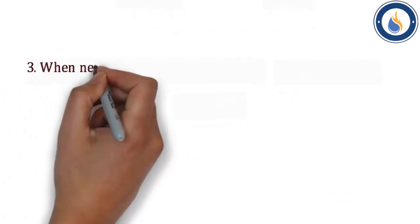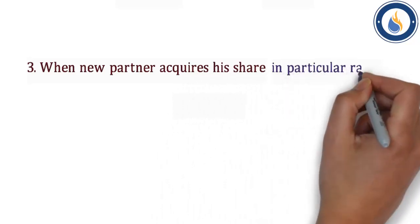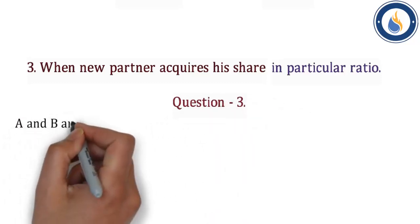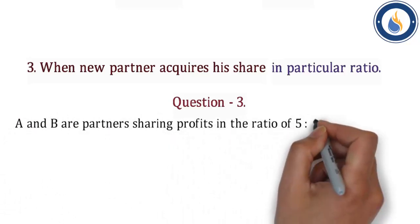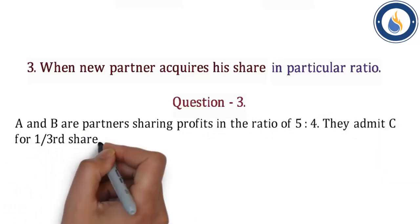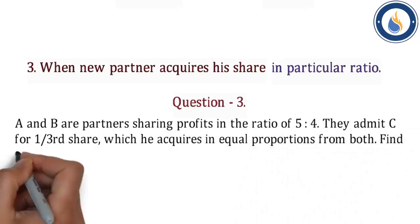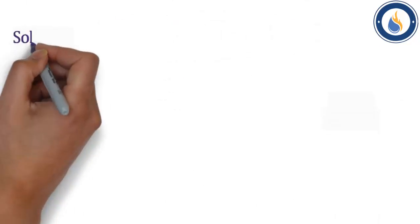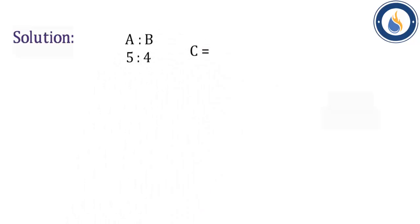Third condition — When new partner acquires his share in a particular ratio. Question 3: A and B are partners sharing profits in the ratio of 5:4. They admit C for one-third share which he acquires in equal proportion from both. Find the new profit sharing ratio.